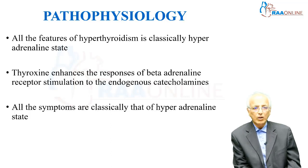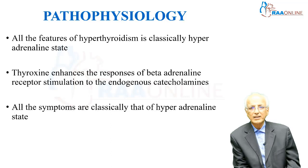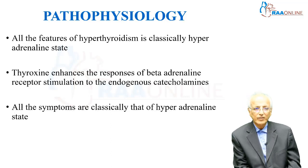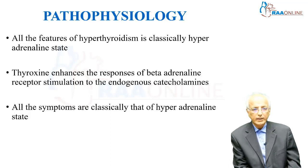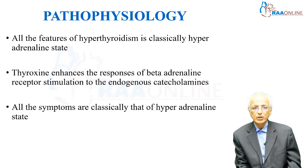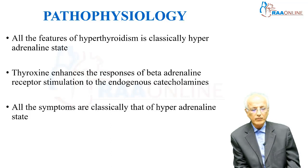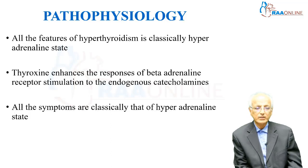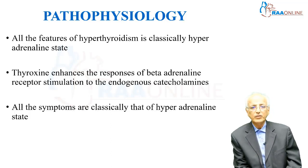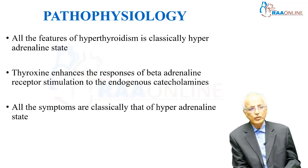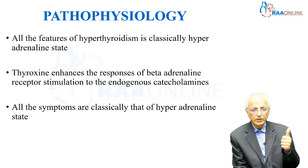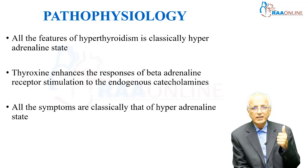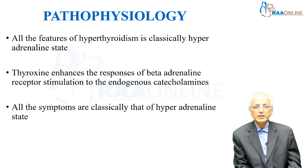Another important factor to remember is that all the features of hyperthyroidism are classically because of a hyperadrenaline state. Hyperthyroidism per se does not increase the serum adrenaline level, but thyroxine enhances the response of beta-adrenergic receptors to endogenous catecholamines. So even when normal catecholamines are available in the circulation, the response is enhanced by increased thyroxine level — meaning any thyrotoxic symptoms will classically resemble a hyperadrenaline state. This is why the differential diagnosis includes pheochromocytoma and anxiety neurosis, both of which also present with an increased adrenaline state.